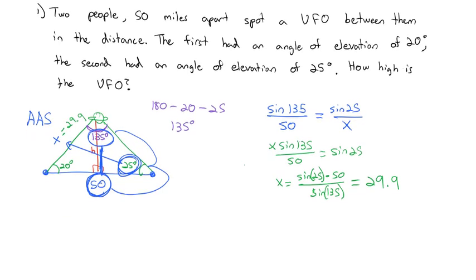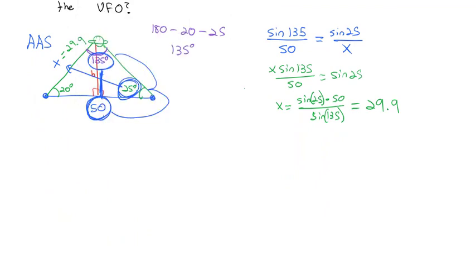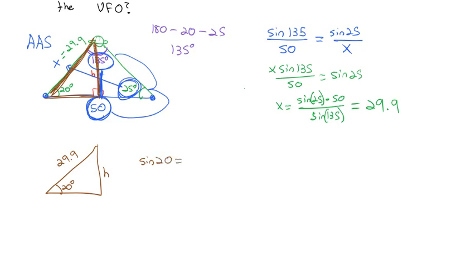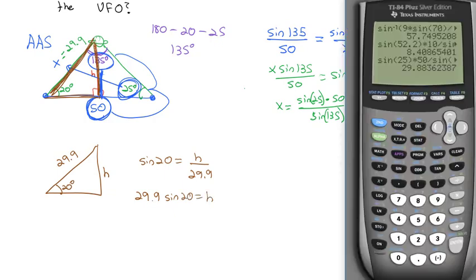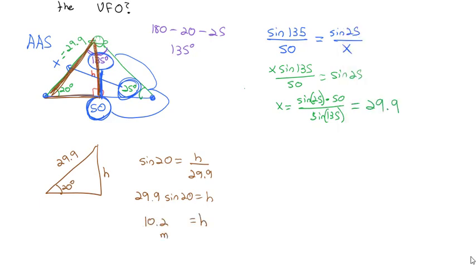Now looking at just the right triangle on the left side, we know the hypotenuse is 29.9 and the angle is 20 degrees. We're solving for the height, which is opposite over hypotenuse: sine of 20 equals h over 29.9. Multiplying both sides by 29.9, we get 29.9 times sine of 20 equals the height, which is about 10.2 miles.